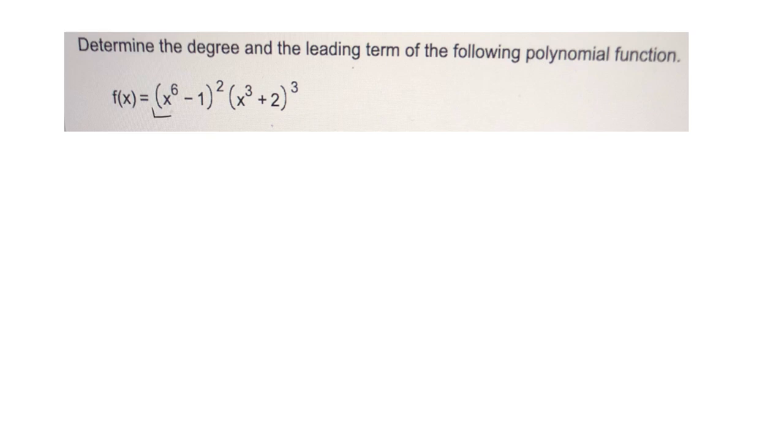So I have this and it's squared, so that would be x to the 6 minus 1 times x to the 6 minus 1. And then the next one would be x cubed plus 2 times x cubed plus 2 times x cubed plus 2, because there's three of them.